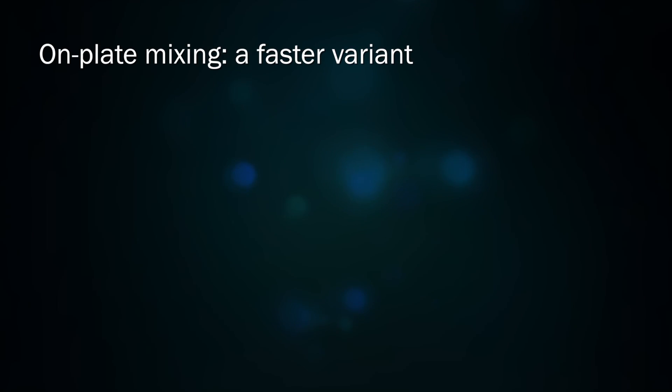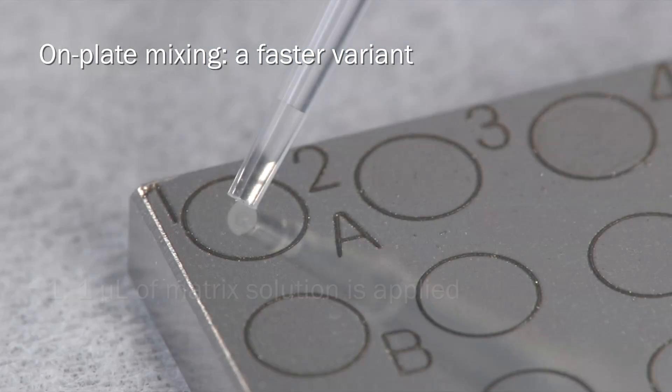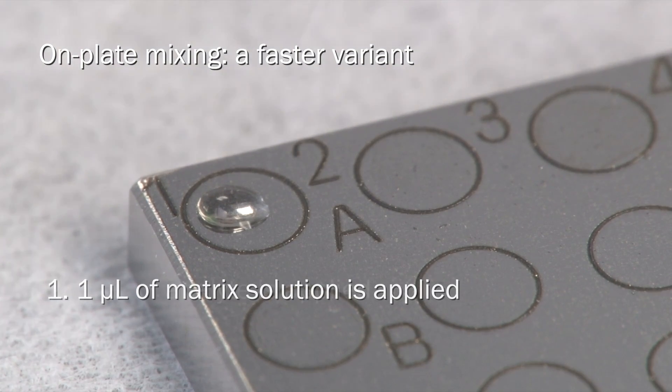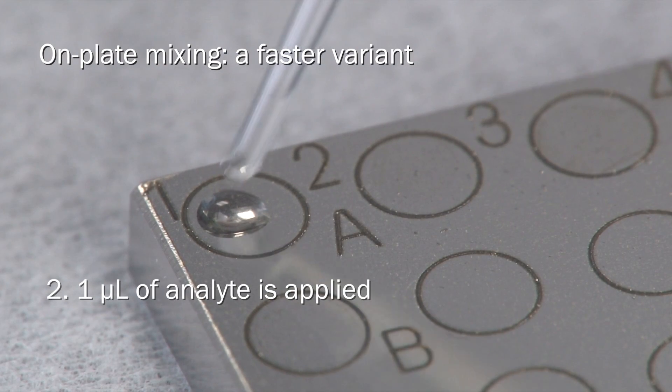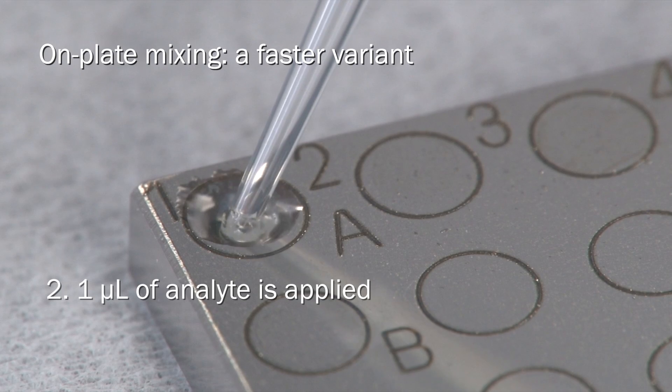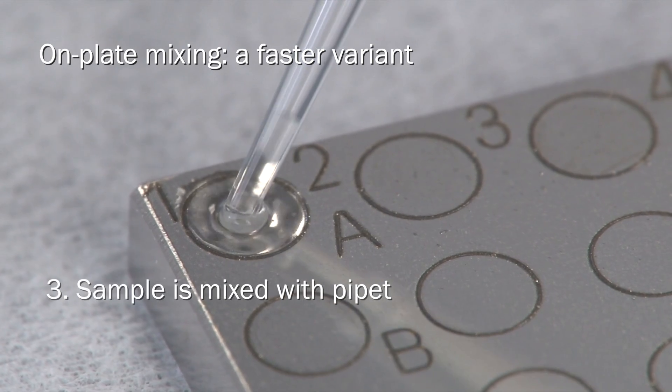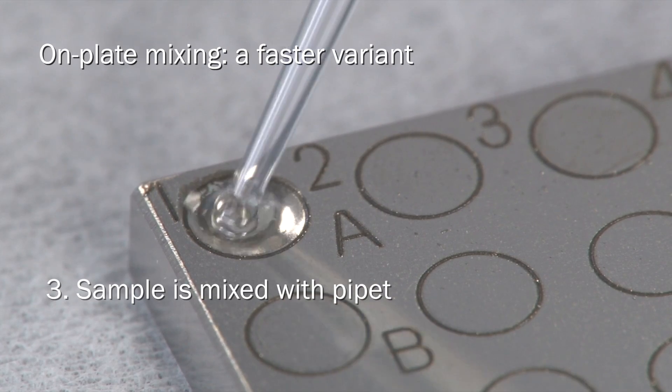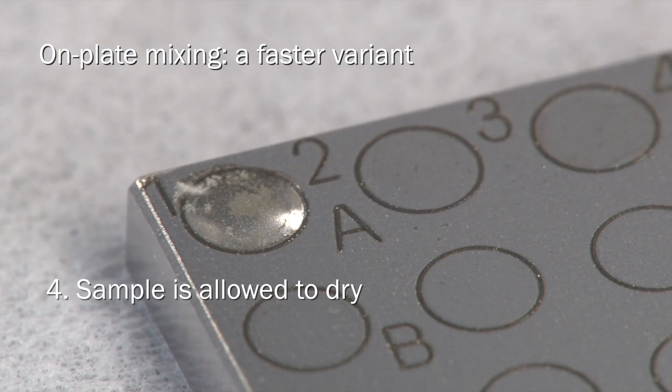A faster variant of the dried droplet method is on-plate mixing. A 1 µL droplet of the matrix solution is applied to the target, and before it dries, 1 µL of the analyte solution is added into the matrix droplet. The solutions are mixed by repeatedly withdrawing and expelling with the pipette tip. The sample spot is then allowed to dry.